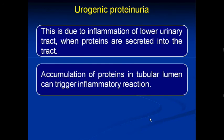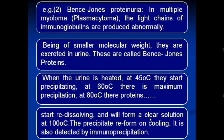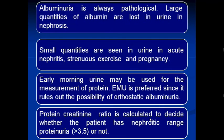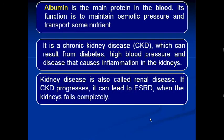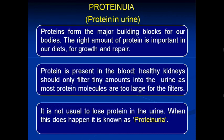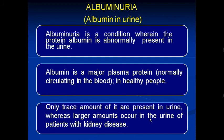In summary, remember the names of all types of proteinuria and their definitions: glomerular proteinuria, microalbuminuria, overflow proteinuria, tubular proteinuria, nephron loss proteinuria, and urogenic proteinuria. Also remember the definition of proteinuria and albuminuria, and the normal ranges. Prepare short notes on these topics, as short notes on albuminuria or proteinuria are sometimes asked in university examinations.